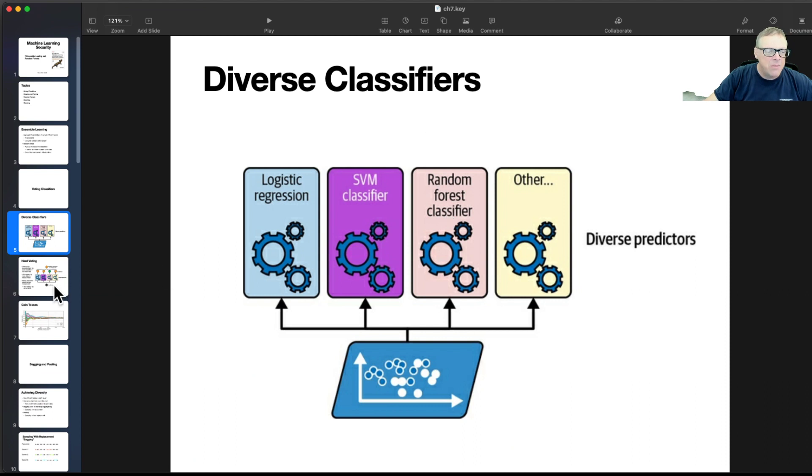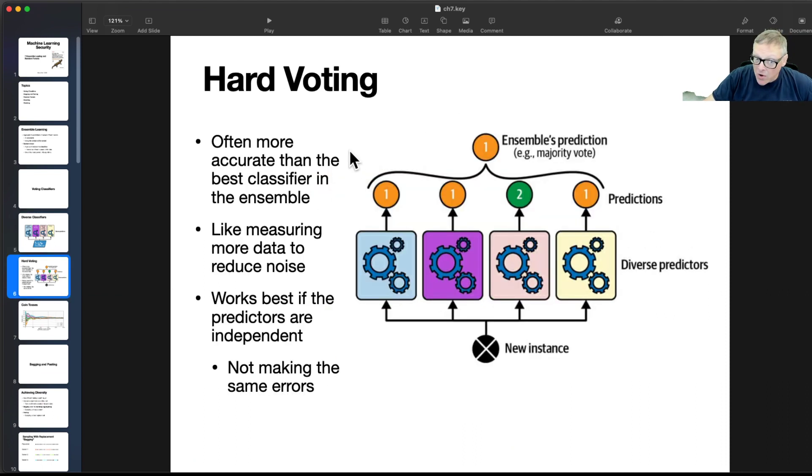And a random forest classifier we talked about before, where you just make random, choose random attributes and choose random thresholds and then classify things that way. Anyway, you have a variety of these things and then combine their outputs. So you can use hard voting, this is a simple way to do it, or you just use majority voting, just like American elections, if we didn't have the electoral college. I think the less than presidential elections actually do work this way, where you just count the votes and the person with the most votes wins.